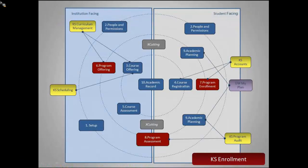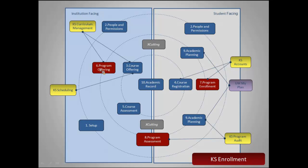Just to orient you to the functional areas we're dealing with in this training: we did the outer circle in the second training, we did people and permissions, and in the third training we moved to the course circle, covering course registration and course assessment. Now we're moving to the middle circle — program offerings — and we necessarily have to back up a little into curriculum management to understand programs at the canonical level before we can understand program offerings. We're going to look at how programs are offered, how students enroll in programs, and how program assessment happens.